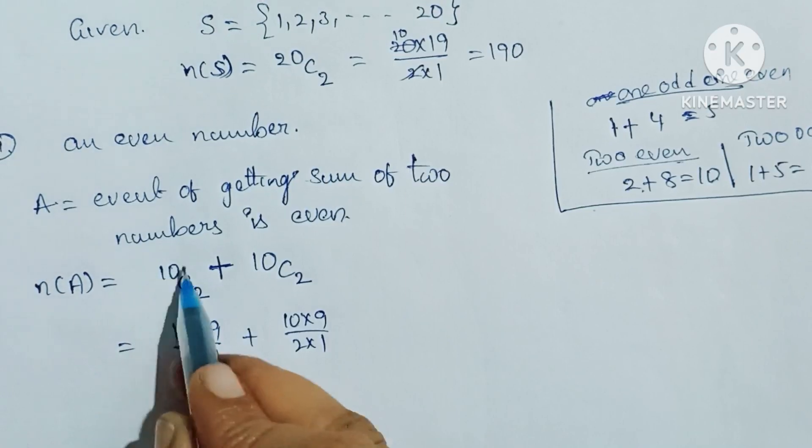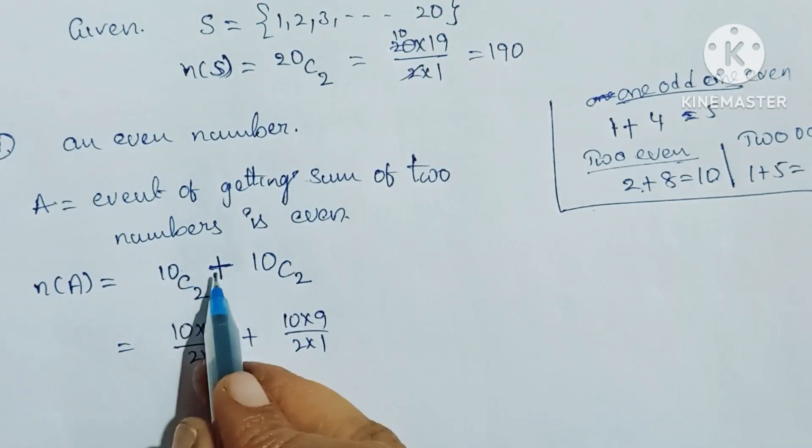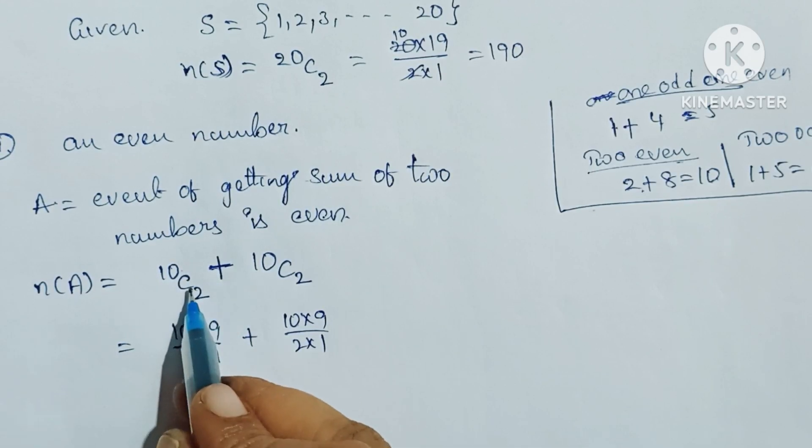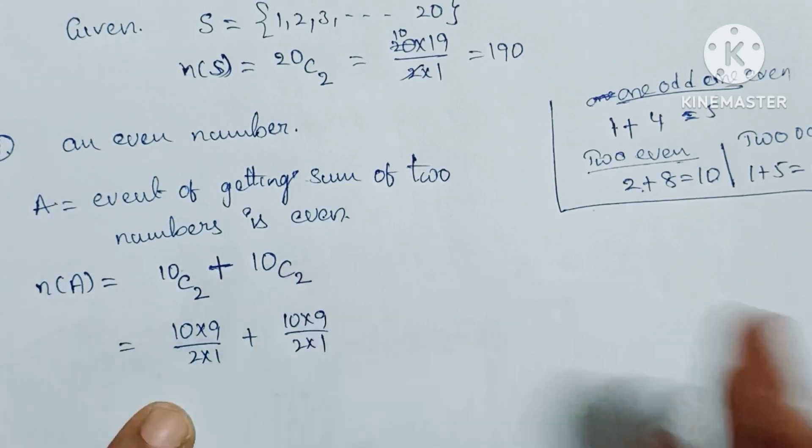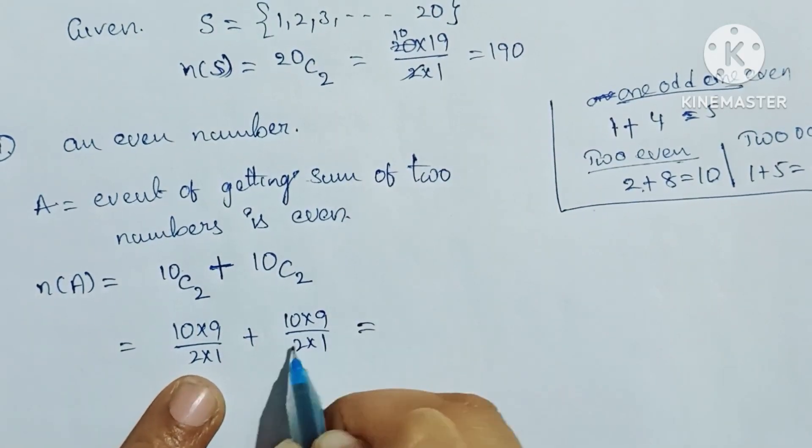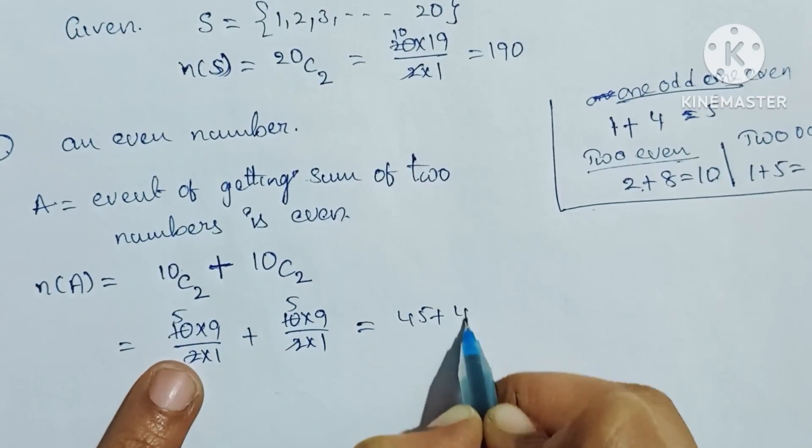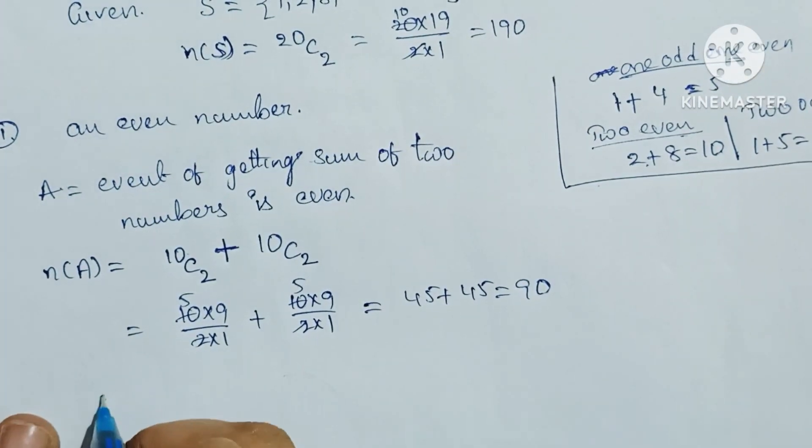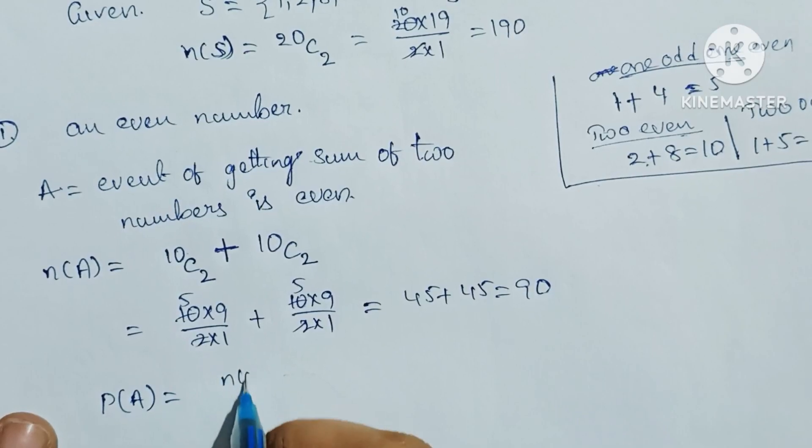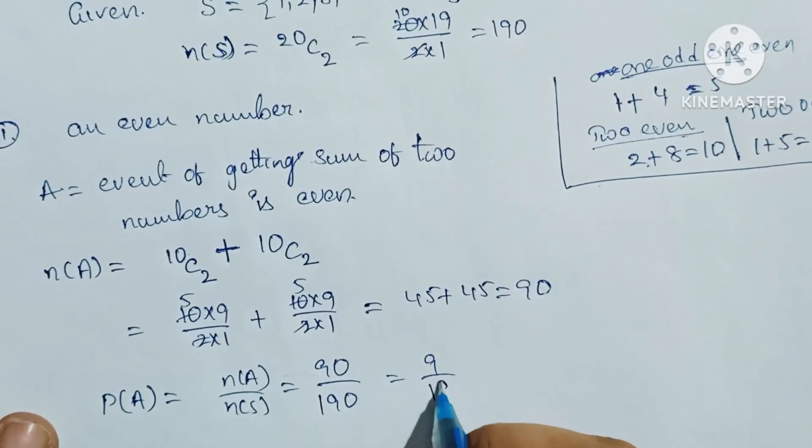This equals 45 plus 45. Total is 90. Probability of even number: Probability of A equals n(A) by n(S) equals 90 by 190, which equals 9 by 19.